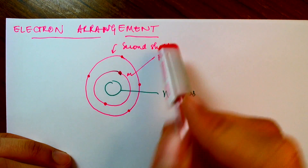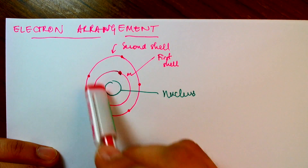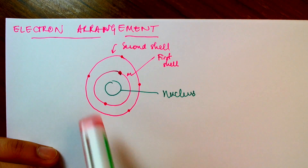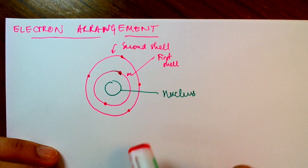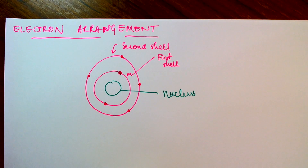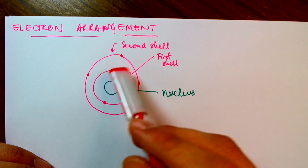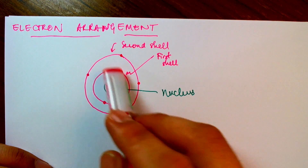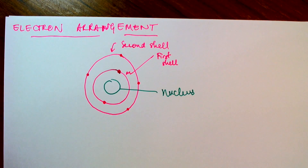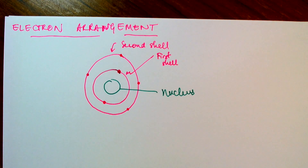The higher up you go in the shell number, the more energy you have. That's where our analogy with the solar system kind of breaks down, because the planets closer to the sun actually move faster — so Mercury is the fastest, followed by Venus, then Earth. It's kind of reversed in this case, but all analogies have their limitations. In chemistry, the arrangement of electrons is of utmost importance.